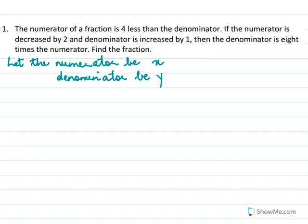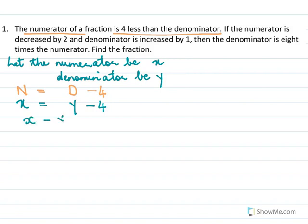Now, the numerator is 4 less than the denominator, so numerator is x equals denominator minus 4, that is y minus 4. So x minus y equal to minus 4. This is equation 1.